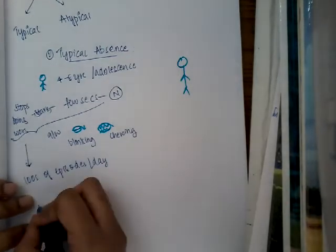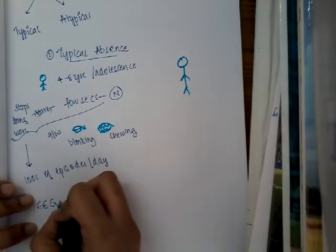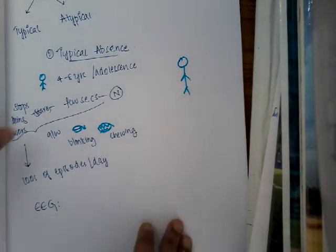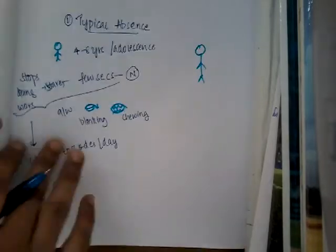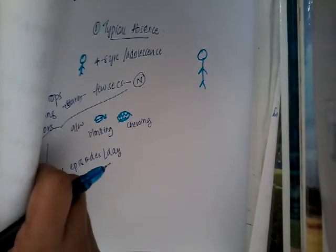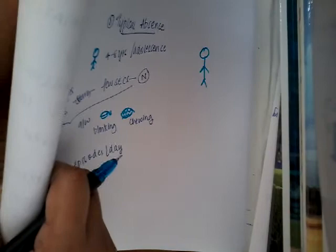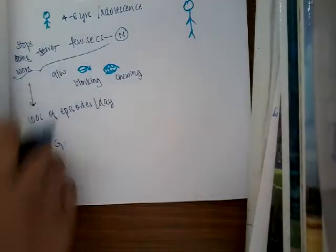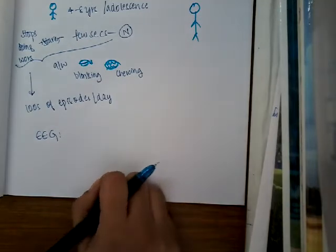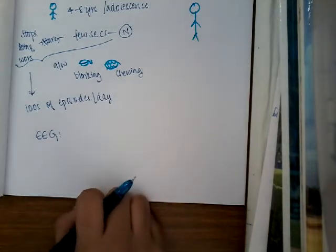Then how are you going to investigate it? The best investigation that we do is EEG because we are not able to see the seizures per se. So we'll have to have some evidence and some clear idea that he had a seizure episode. So for that, we have to do a EEG.